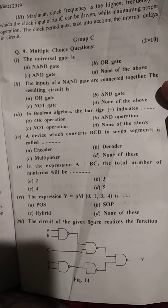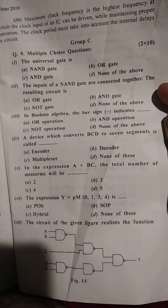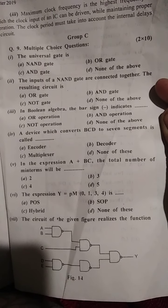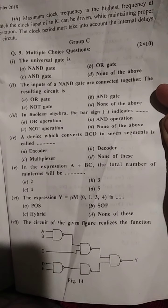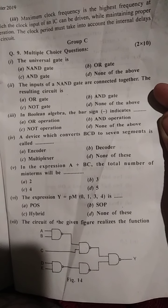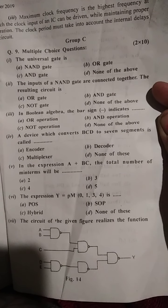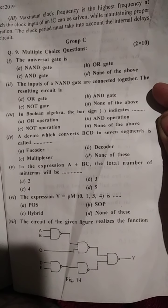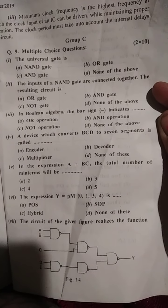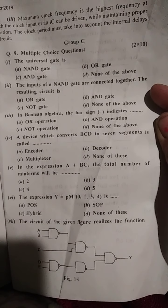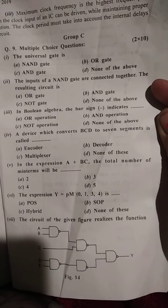Second question: the inputs of a NAND gate are connected together. The resulting circuit is NAND gate. Third question: in boolean algebra, the bar sign or underscore indicates the NOT operation. Answer is C, NOT operation.